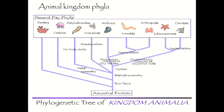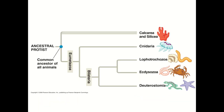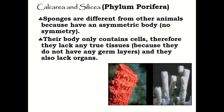There are nine phyla in the kingdom Animalia: Porifera, Cnidaria, Platyhelminthes, Nematoda, Mollusca, Annelida, Arthropoda, Echinodermata, and Chordata. Today we will only learn about the phylum Porifera, Cnidaria, and also Platyhelminthes.